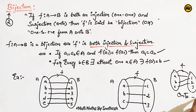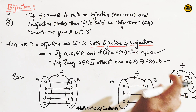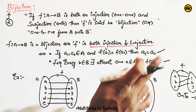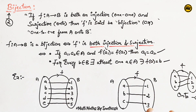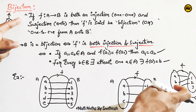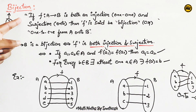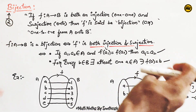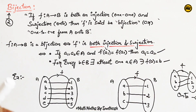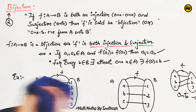The 1-1 function condition is still satisfied because there are different elements and different images. But since it is not onto, the bijection condition fails — no bijection, no injection combined with surjection.